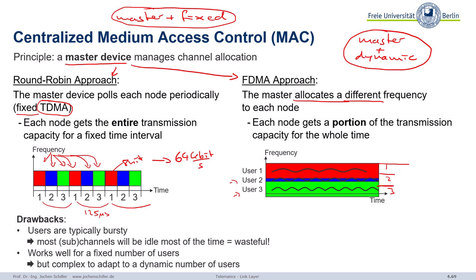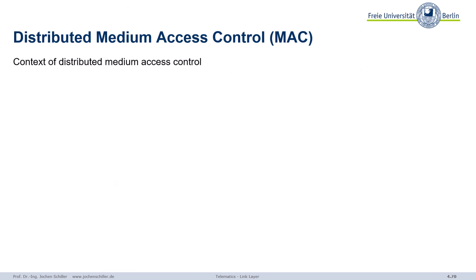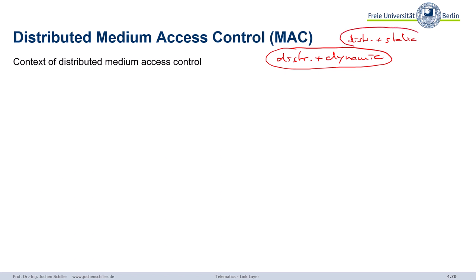The alternative to having a master is to distribute the whole medium access. With distributed medium access, we can have distributed and very flexible, very dynamic schemes. There are also some distributed schemes that are quite static — certain token-passing schemes can guarantee certain data rates and be quite static, but still distributed.